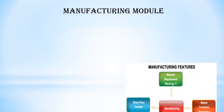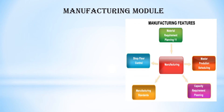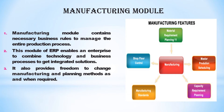Next we have the manufacturing module. What is shown here? Material, production scheduling, capacity requirements, manufacturing standards, and shop floor control — together we have to work in the manufacturing department. The rules of business are necessary to manage the entire production. This module uses combined technology and the business process is an integrated solution. It also provides freedom to change the manufacturing planning method, so if you implement this model, you can also change your method.